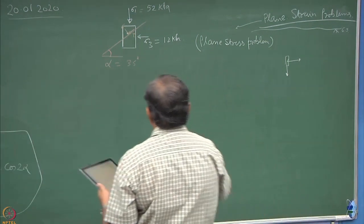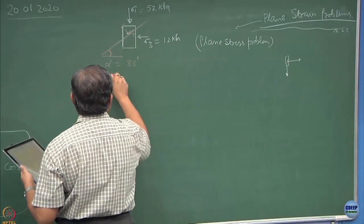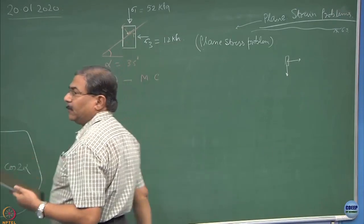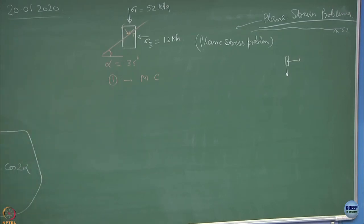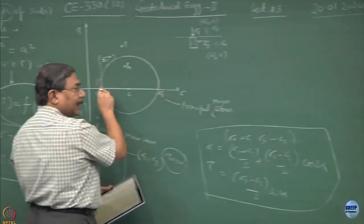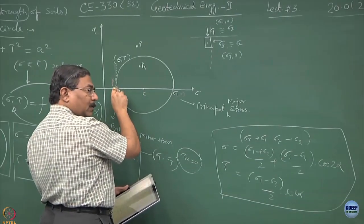So try to solve this. The first thing you have to do is complete the Mohr circle. You can do it very easily - sigma 1 is known, sigma 3 is known, radius is known, center is known, everything is known. Once this is known, 52,0 is acting here, 12,0 is acting over here, pole is known.